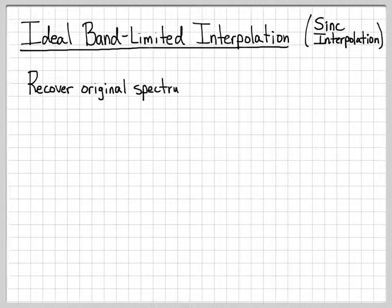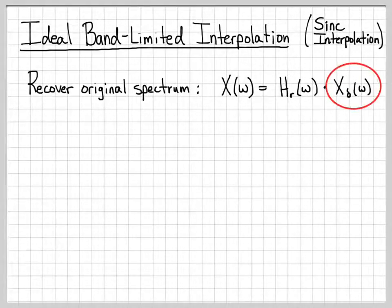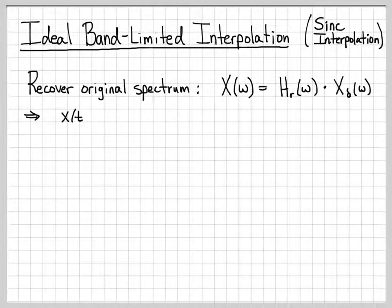What we're trying to do is recover the original signal spectrum, x(ω). We're going to do that by filtering the impulse sampled signal in the frequency domain with this ideal reconstruction filter, hr(ω). This is what we just did in the previous video — we thought about it in the frequency domain. Now we're going to think about the equivalent version of this filtering process in the time domain.